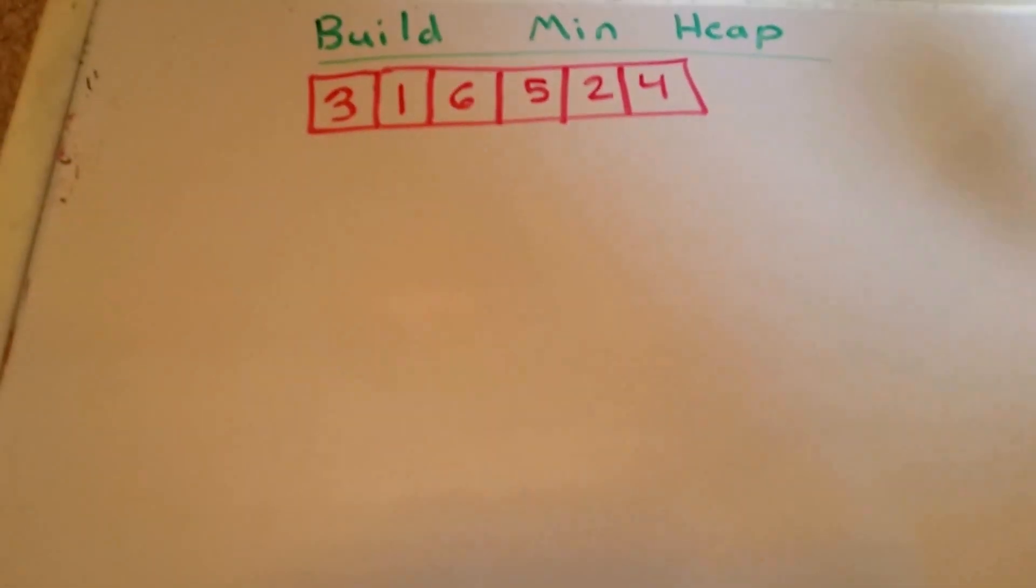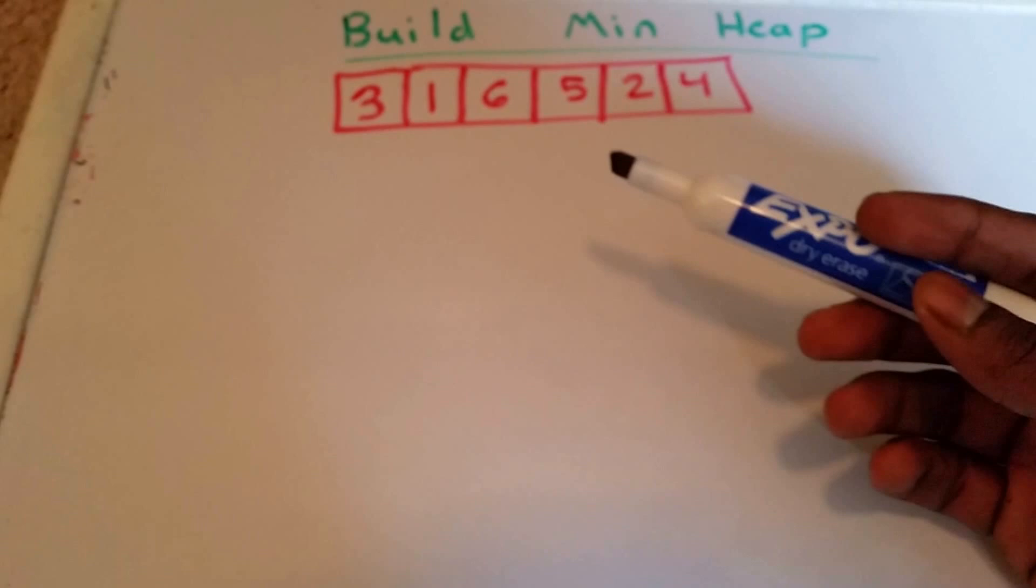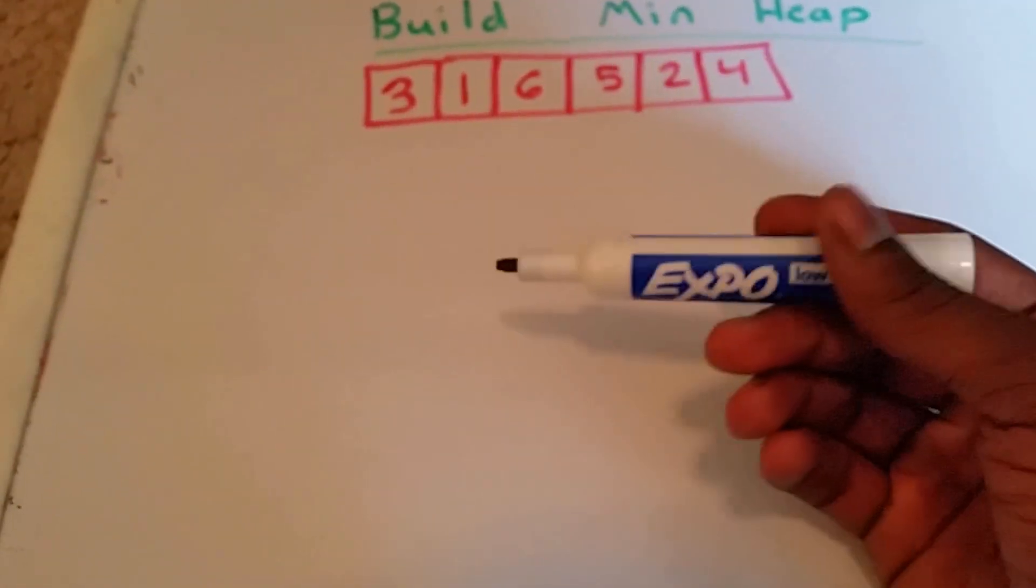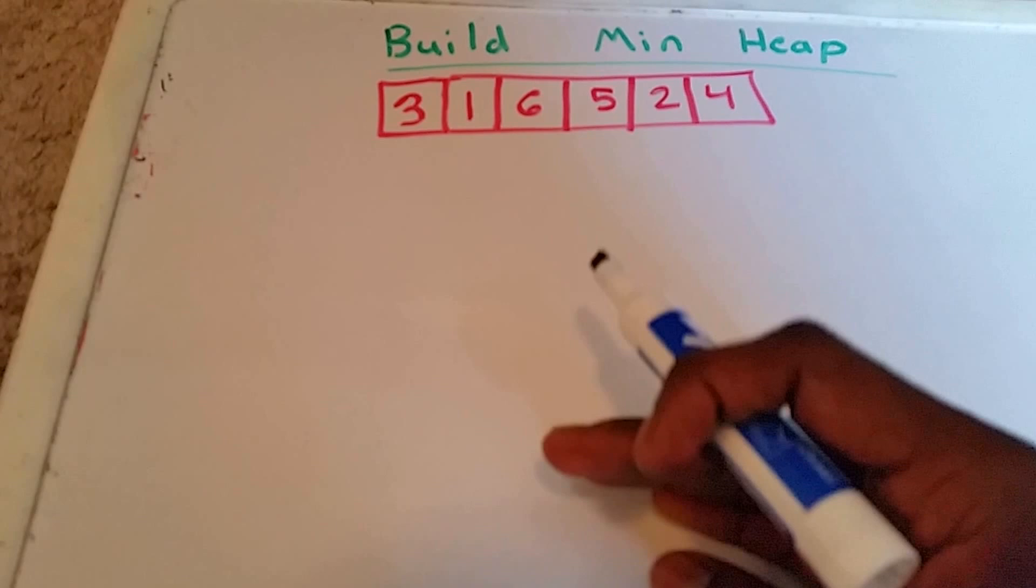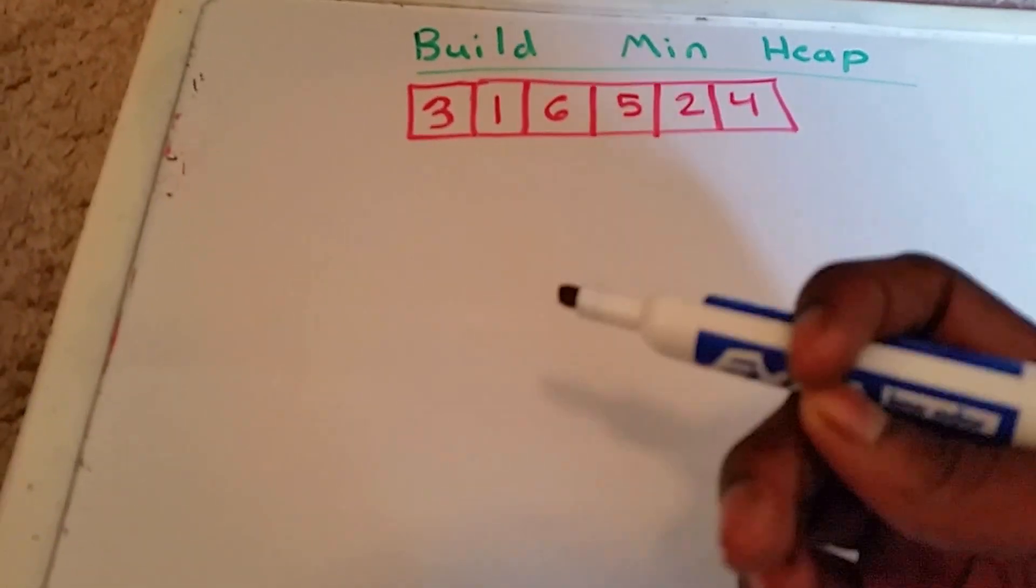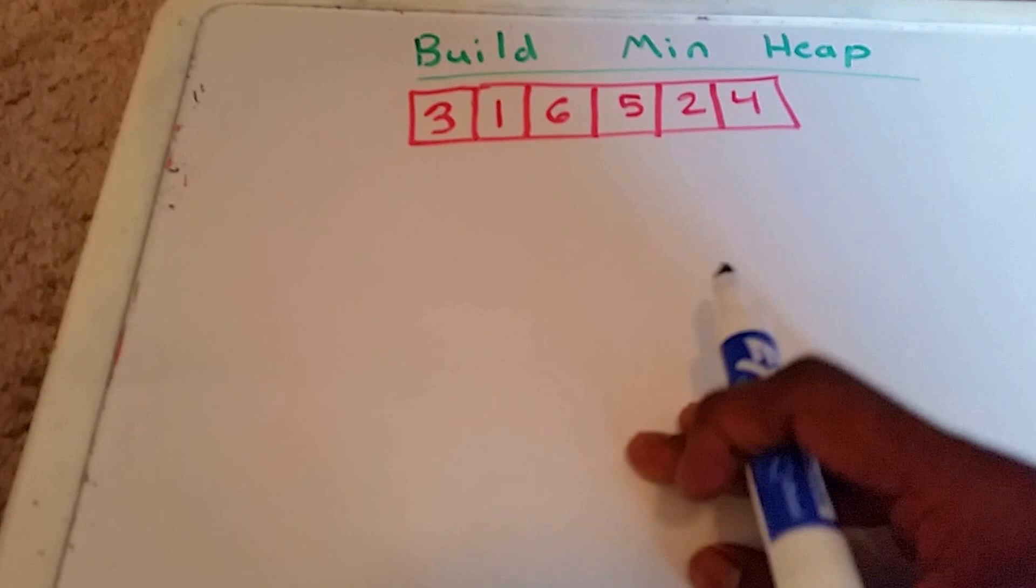Hey guys, this is a video to build a minimum heap, also known as min heap. We have an array here that we want to make a heap. Building a heap from an array of n input elements can be done starting with an empty heap, so that means there's nothing there, it's completely empty.